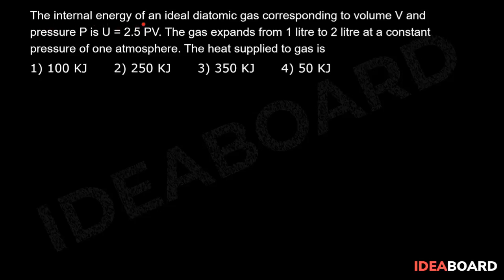The internal energy of an ideal diatomic gas corresponding to volume V and pressure P is U = 2.5 PV. The gas expands from 1 liter to 2 liters at a constant pressure of 1 atmosphere. The heat supplied to the gas is: